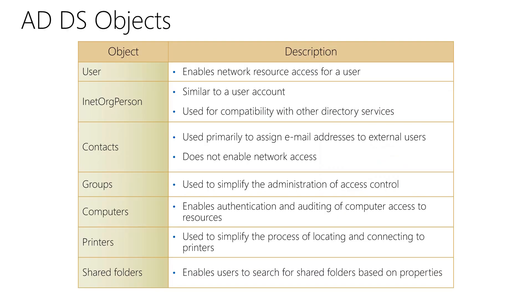Active Directory Domain Services objects — here is just an overview, because when we do the hands-on lab for deploying Active Directory Services we will come across all these objects in detail. A user object enables network resource access for a user. Other objects include contacts, groups, computers, and printers. A short description is given on screen, and you will have a better understanding when doing the hands-on lab.